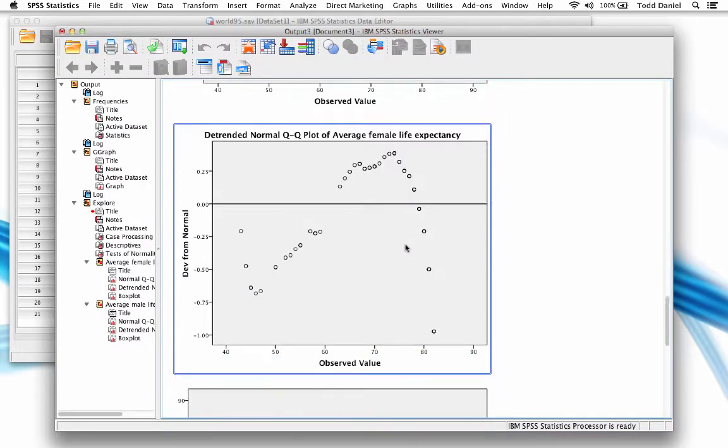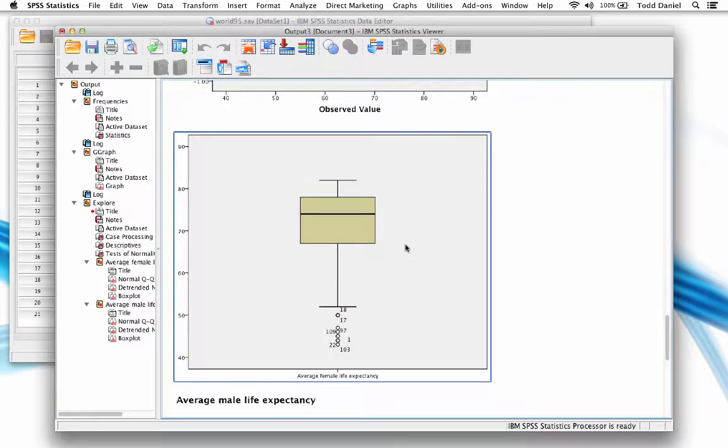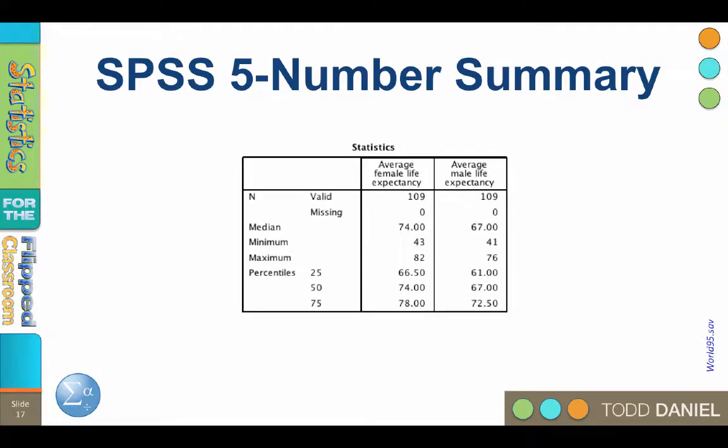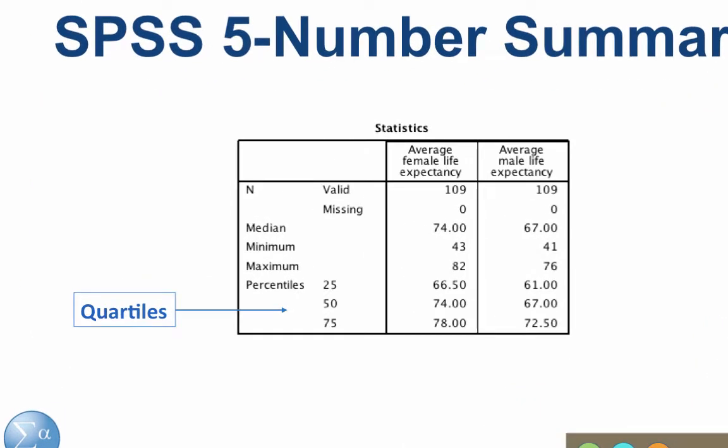Scroll down a little more and there's another box plot. Using the output from SPSS, let's create the five number summary. First of all, notice that the quartiles are actually listed as percentiles.